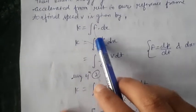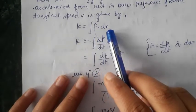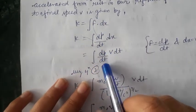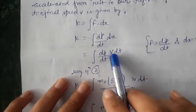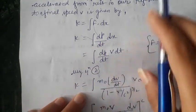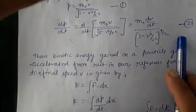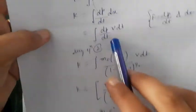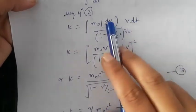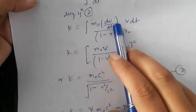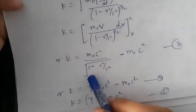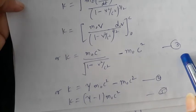Kinetic energy K equals force into displacement. From Newton's second law, force equals dP/dt. We know v = dx/dt, so dx = v·dt. Substituting the value of dP/dt from equation 2 into this expression, v and dt cancel, leaving dP. Integrating from 0 to v, after solving we obtain equation number 3.